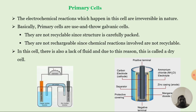Here we are going to discuss primary cells. The electrochemical reactions which happen in this cell are reversible in nature. Basically, primary cells are used through galvanic cells — already discussed today using zinc and copper. The primary cells are not recyclable since the structure is carefully packed, and they are not rechargeable since the chemical reactions involved are not reversible. There is also a lack of fluid, and due to this reason, they are called dry cells.